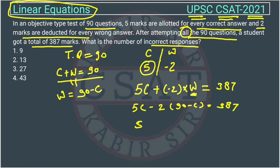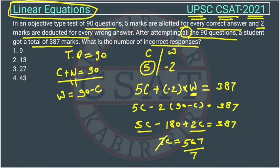So 5C minus 180 plus 2C equals 387. 180 will come to this side and get added to 387. 5C plus 2C is 7C. This will become 567.